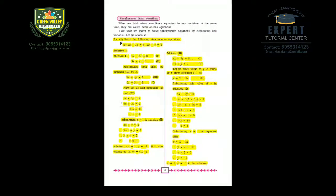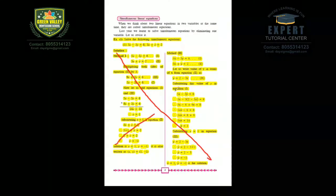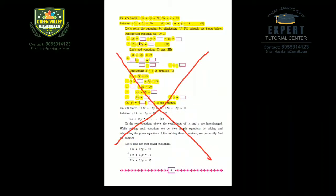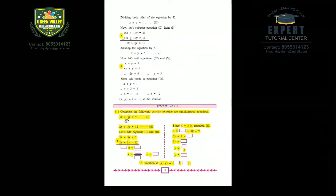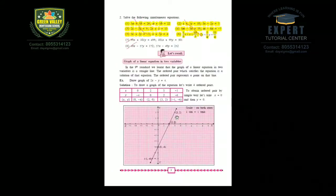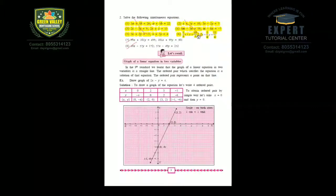On page number 2, the yellow portion is marked as deleted — that portion is not in your syllabus. Moving to page number 3, sum number 2 is also deleted. On page number 4, the yellow marked portion is deleted. On page number 5, question number 2 is covered — questions 1 through 6 are in your exam, and questions 7 and 8 are also retained.